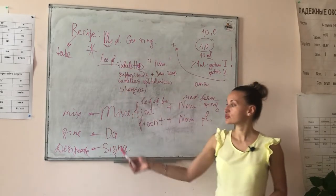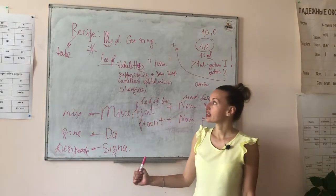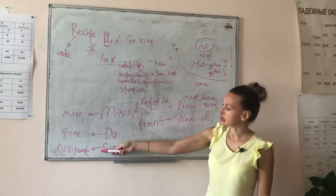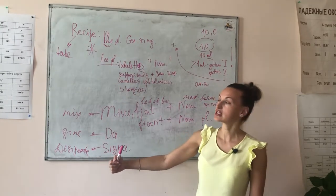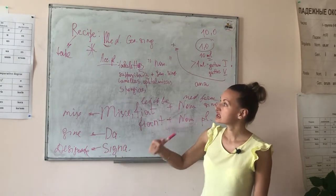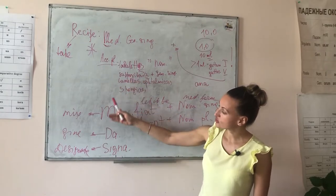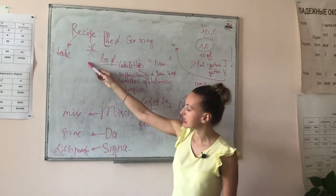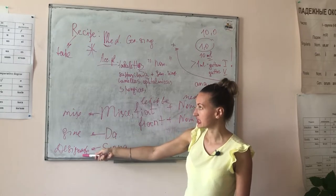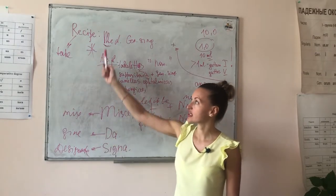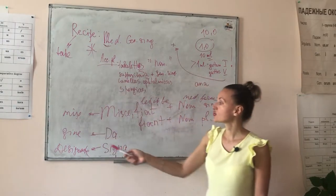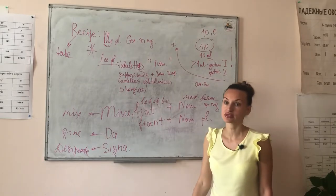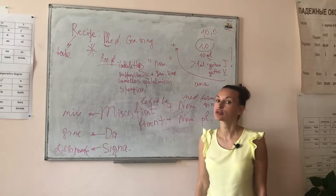As you can see from my blackboard, that is the list of commands — the list of commands in the imperative mood. For example: take, mix, give, designate. These are the parts of the Latin part of the prescription.